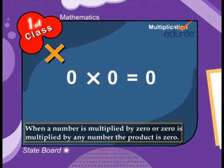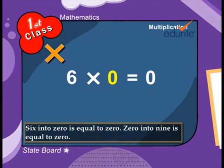When a number is multiplied by 0 or 0 is multiplied by any number, the product is 0. For example, 6 into 0 is equal to 0. 0 into 9 is equal to 0.